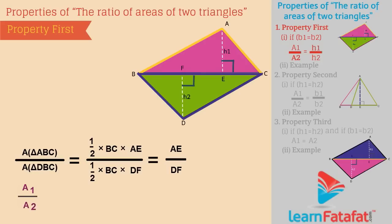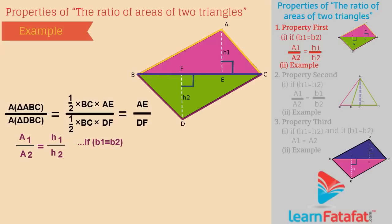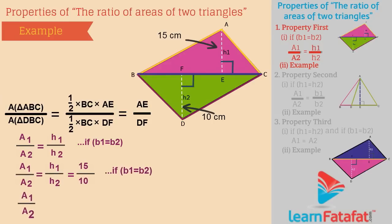That is, A1 divided by A2 is equal to H1 divided by H2, for all cases if B1 is equal to B2. For example, if AE equals H1 equals 15 cm, and DF equals H2 equals 10 cm, then A1 divided by A2 is equal to H1 divided by H2, which is equal to 15 divided by 10, which is equal to 3 divided by 2.